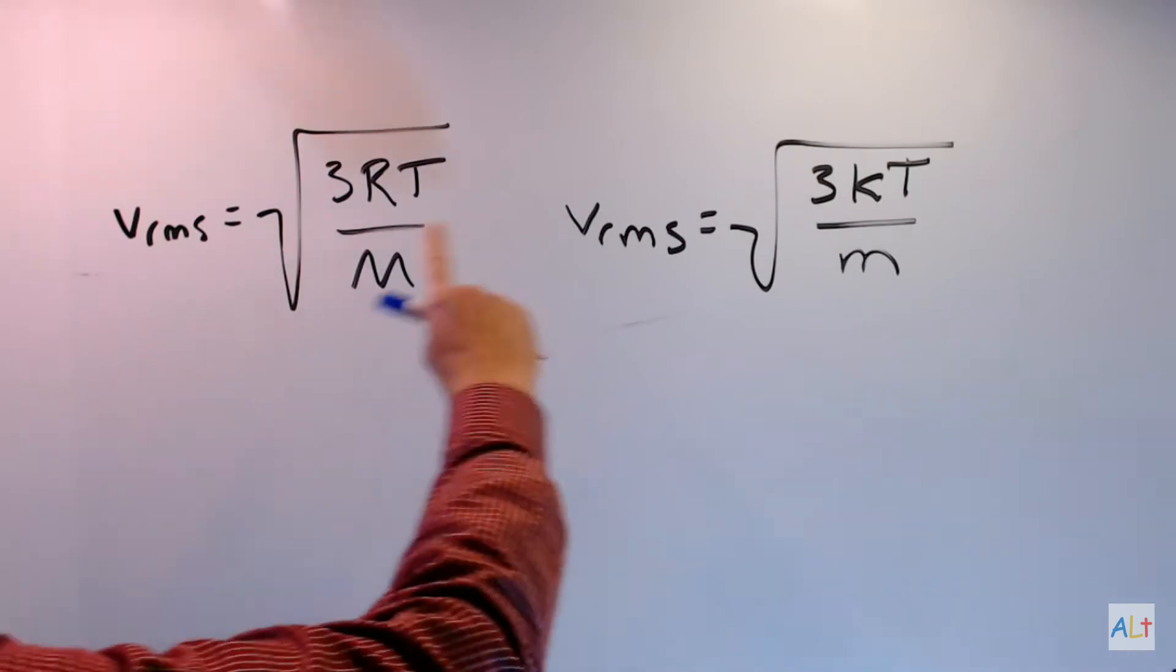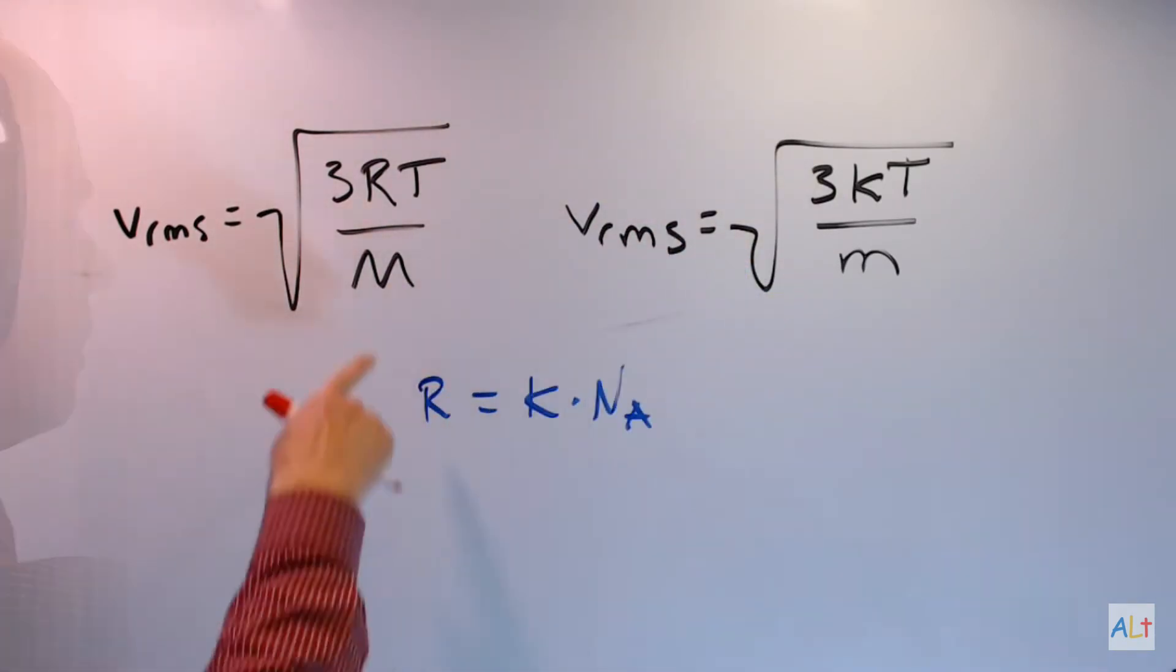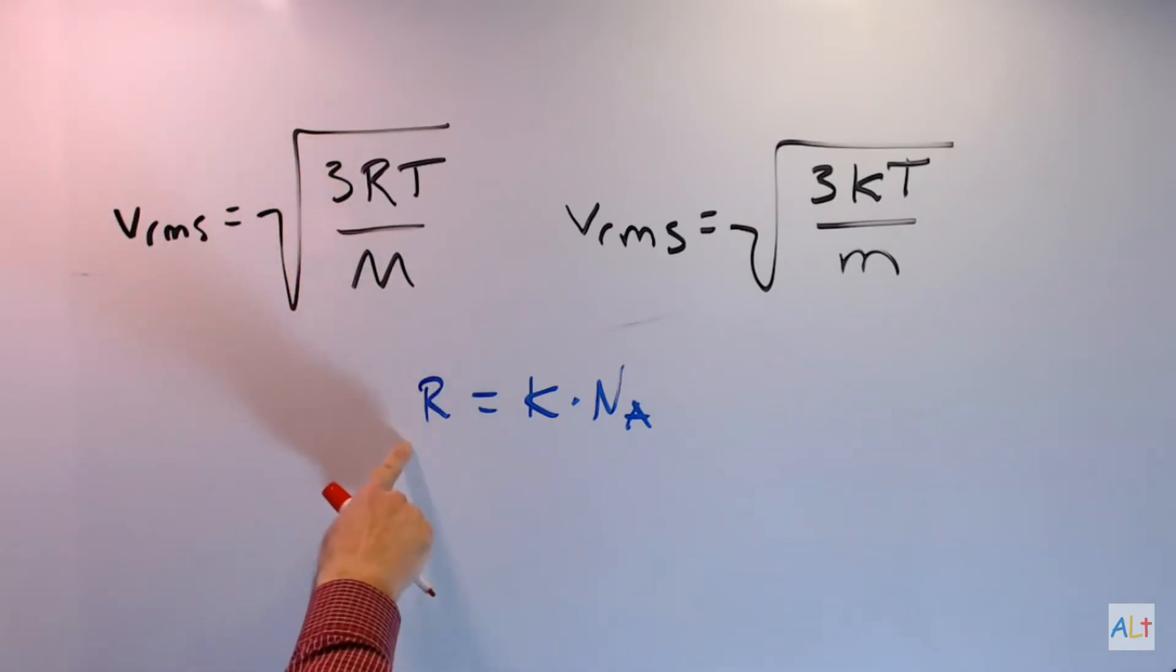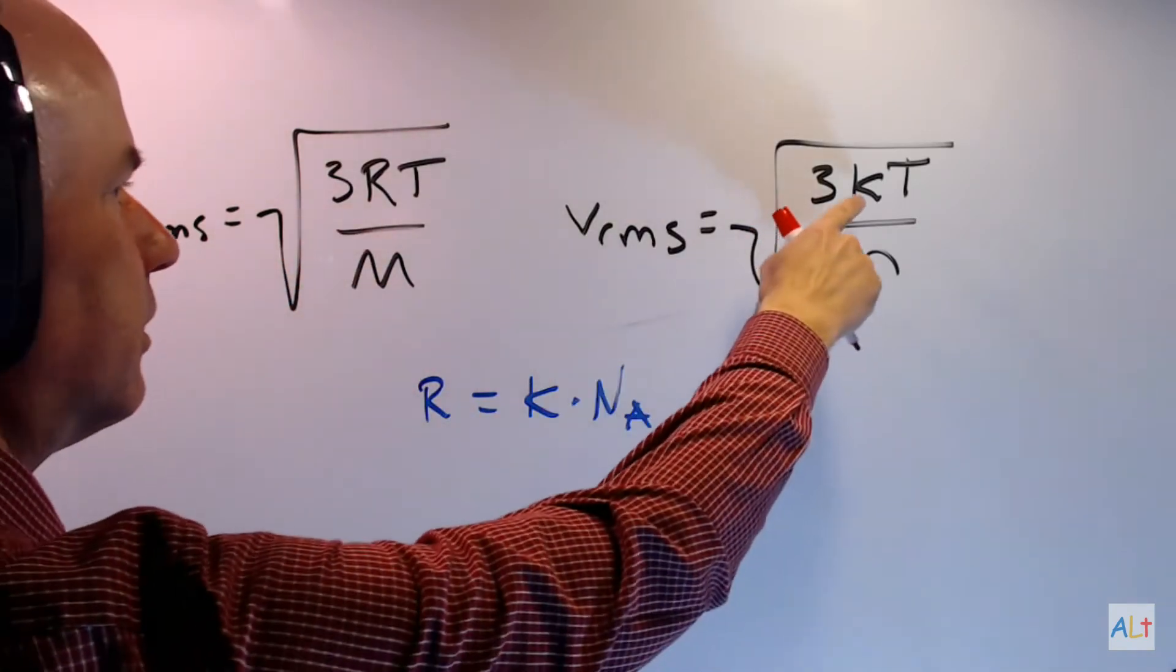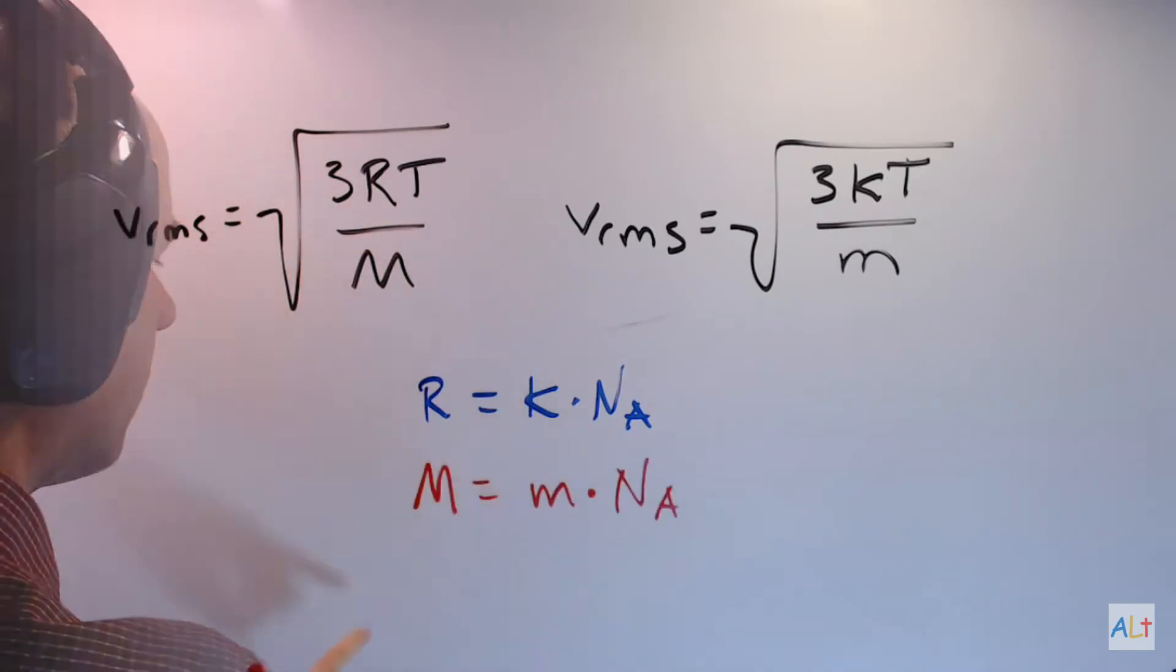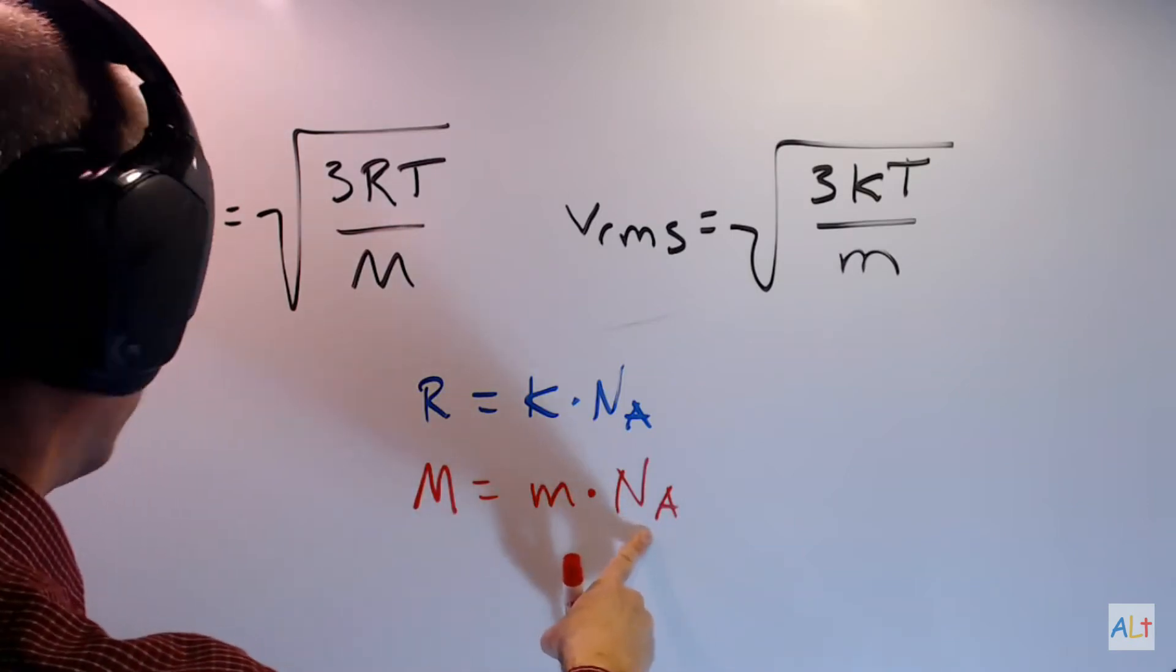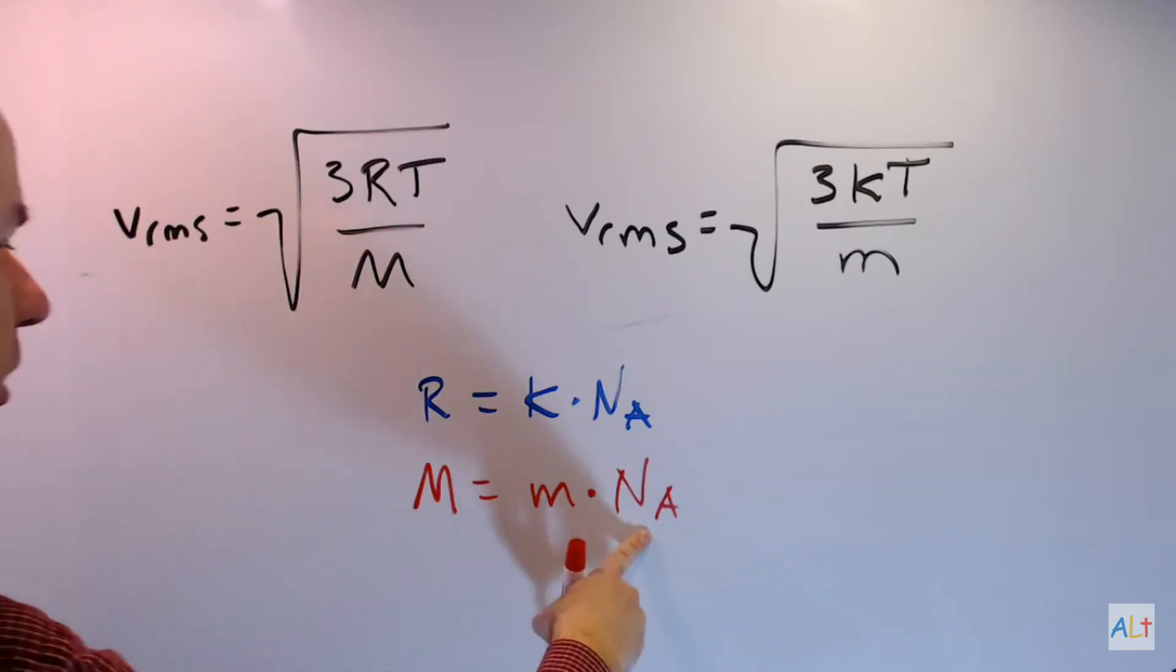Now, it's easy enough to convert back between these two because the molar gas constant R is equal to the Boltzmann constant K times Avogadro's number. And similarly, the molar mass M is equal to the molecular mass m times Avogadro's number.